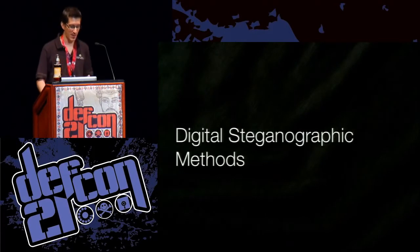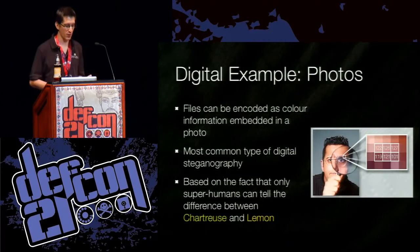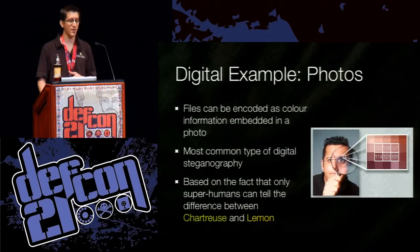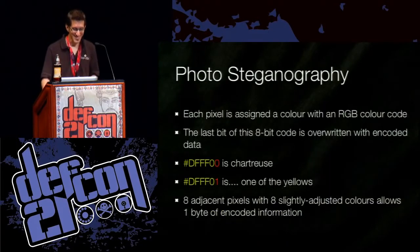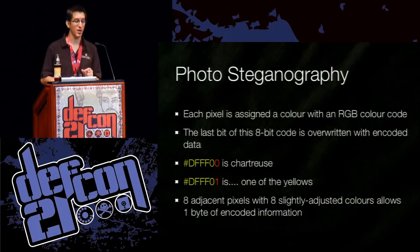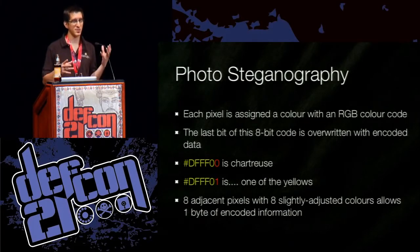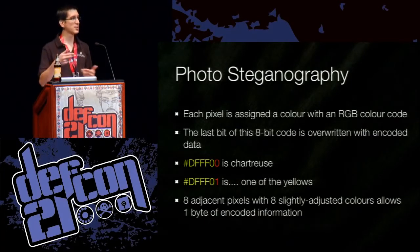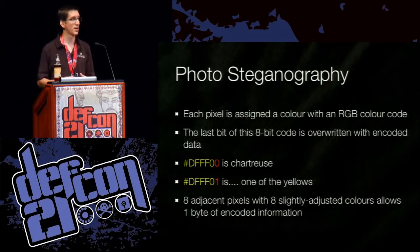Now let's take a look at some digital steganographic methods. The first example is photographs — one of the most common types of digital steganography. You can encode one file as color information inside a photo. This uses the fact that only superhumans can tell the difference between lemon and chartreuse. Each pixel is assigned a color with an RGB color code, and the very last bit of this color code will always be part of the secret message you're encoding. For example, DFFF00 is chartreuse. DFFF01 is imperceptibly different. The difference between the two colors is imperceptible, but if you look at the last digit for all adjacent pixels, you can rebuild a whole other file. Eight adjacent pixels yields one byte of encoded information.